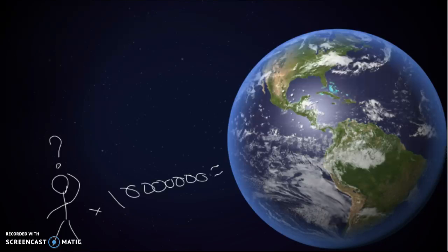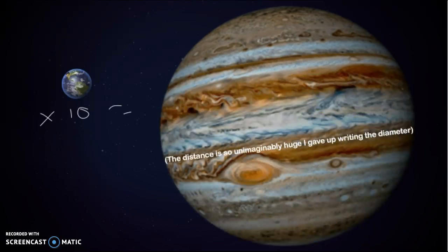But when you compare it to Jupiter, it's got nothing on the largest planet in the solar system. Literally, 10 times the Earth's diameter is equal to the diameter of Jupiter. I mean, this Earth would actually fit in Jupiter's red spot, and that's actually pretty scary when you think about it.